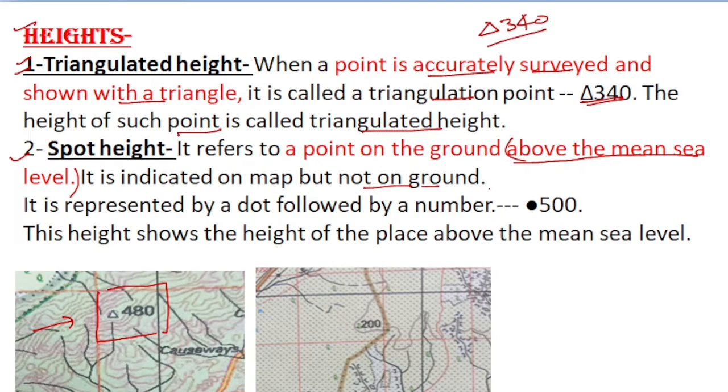This height is taken or counted from the mean sea level. It is represented by a dot followed by a number. For example, you see here it is a dot followed by a number. In topographical sheets you will see it like this.